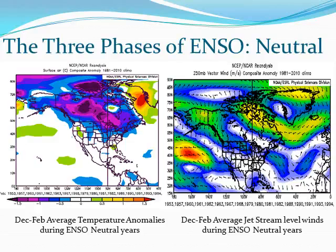The diagram above on the left shows December to February temperature anomalies during previous ENSO neutral years beginning in 1953. Note the finger of cold extending down from Canada into the northern and central U.S. The Pacific Northwest typically sees near average temperatures during ENSO neutral years. On the right side, the diagram indicates jet stream level wind anomalies during the same ENSO neutral years, with a weaker Pacific jet and an area of high pressure centered over western Alaska and eastern Asia.